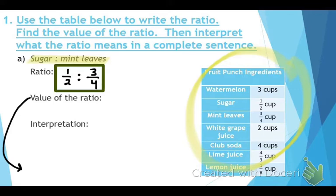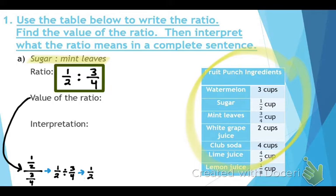Now we need to find the value of the ratio. Take the first amount, one-half, and divide it by the second amount, three-fourths. We cannot divide fractions directly, so we use the KFC method: keep the first one, flip the second one, and change the operation.